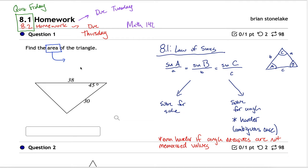When you think about the area of a triangle, you probably think area = ½ × base × height. But sometimes we don't know the height. In that case, we can still figure out the area if we have two side lengths and the angle in between those two side lengths. Using capital A, B, C and little a, b, c as described earlier, the area of a triangle is ½ · a · b · sin(C), where the angle C is between sides a and b.